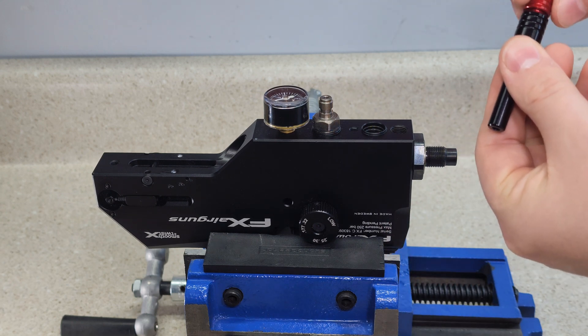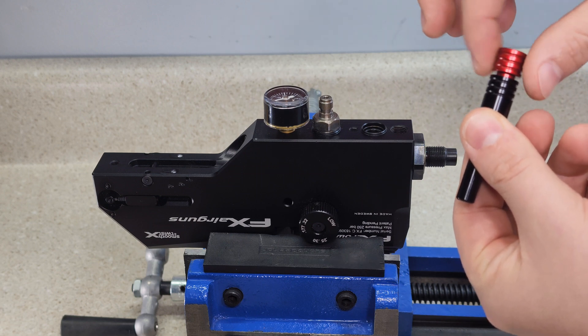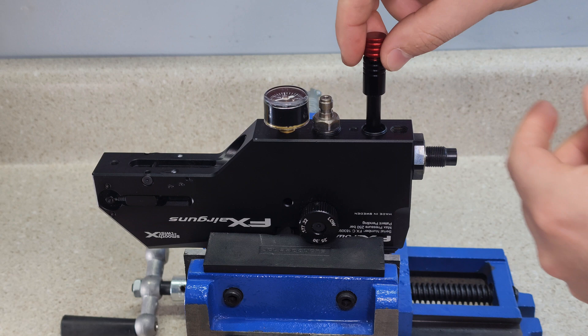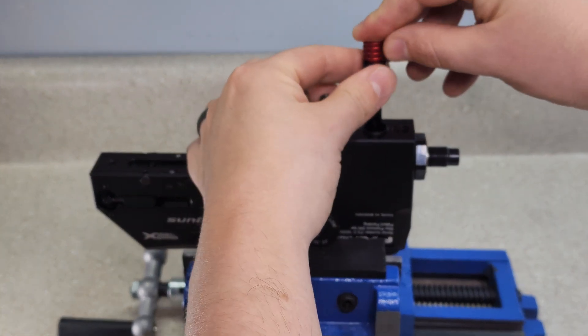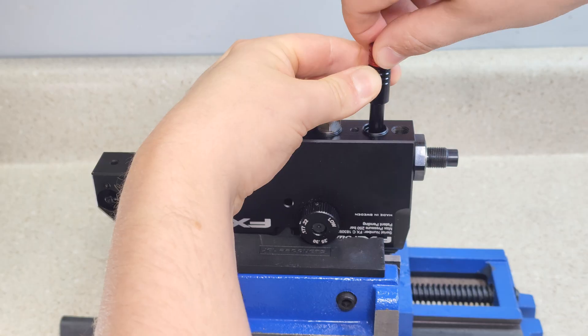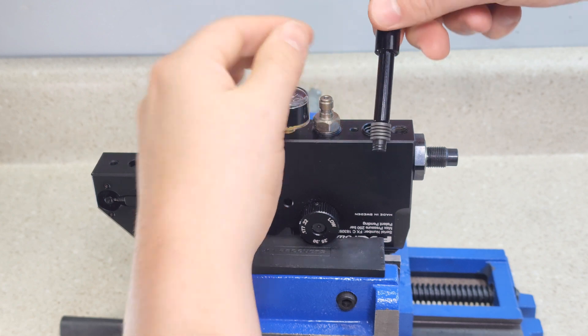So you start it with it just barely touched down, just barely finger tight, not tight. Go down onto the regulator piston, you push, tighten down, you pull out.